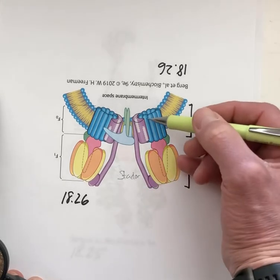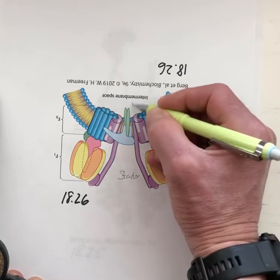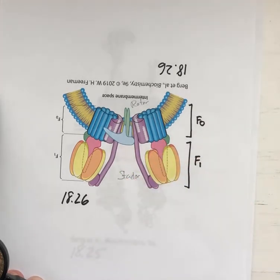The rotating part is this C ring and the gamma subunit. We call that the rotor for this molecular motor, and there's two of them side by side in this dimer.